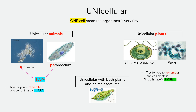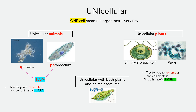Examples of unicellular plants are chlamydomonas and yeast. For this lesson, you have to remember the unicellular organisms. In the animal kingdom there are amoeba and paramecium. To remember them, we use 'one APA': one is unicellular, A is amoeba, and P is paramecium.